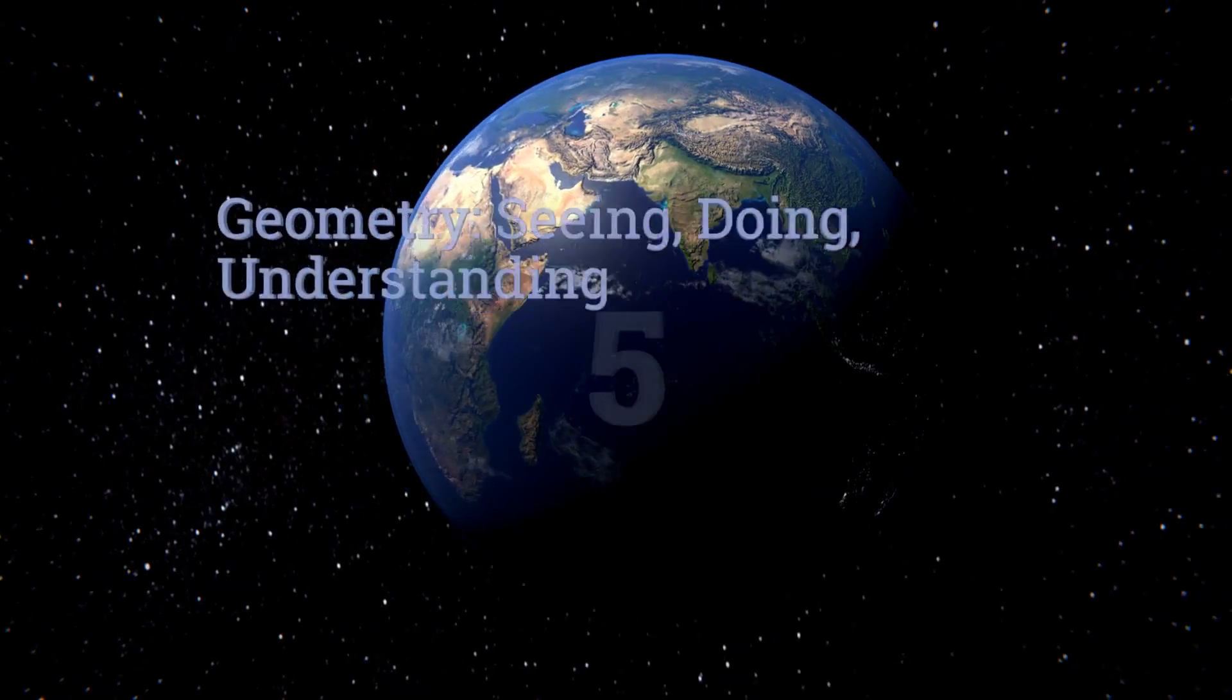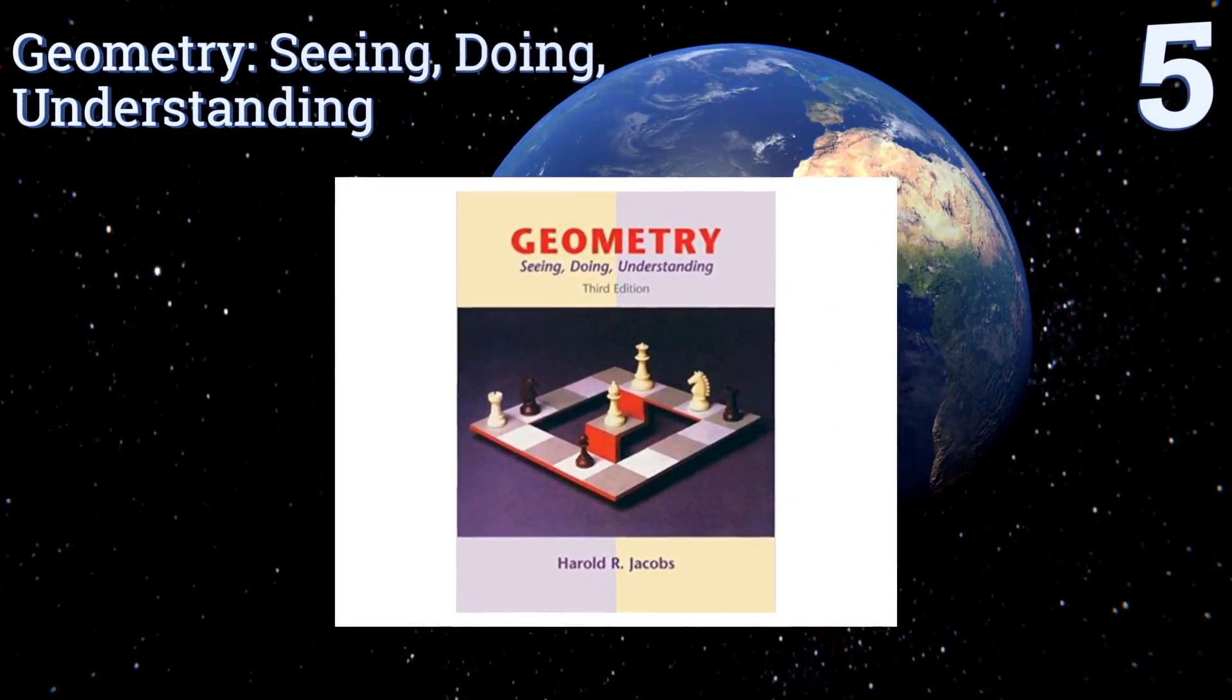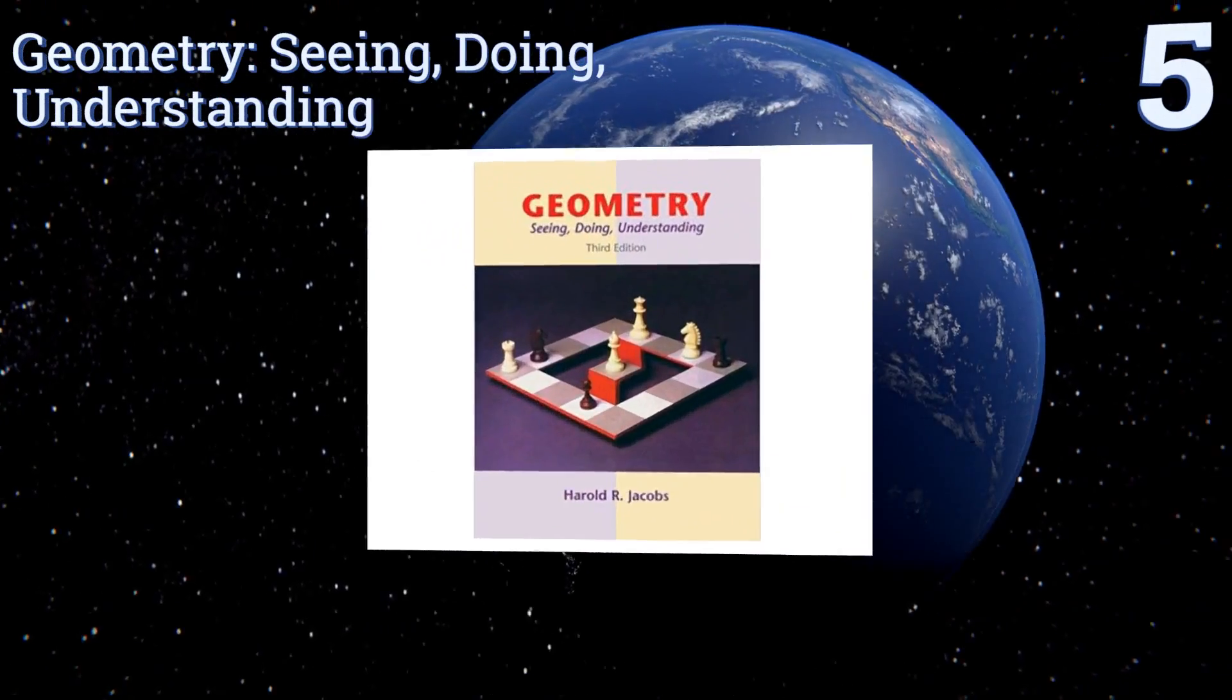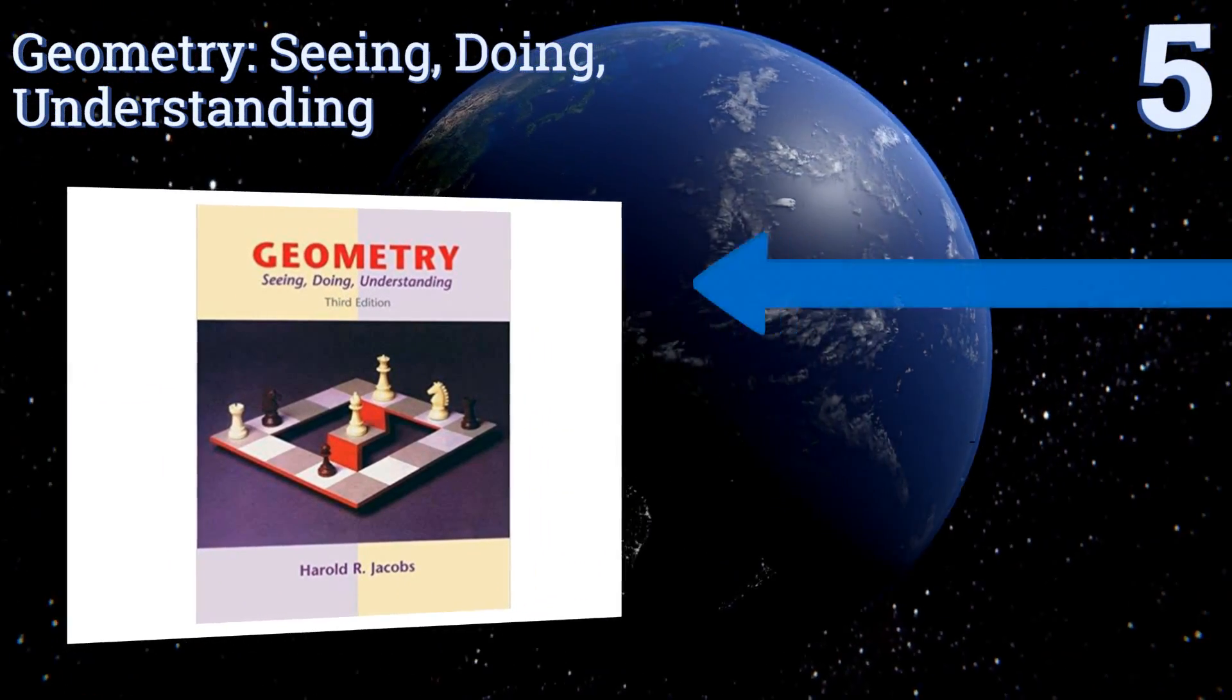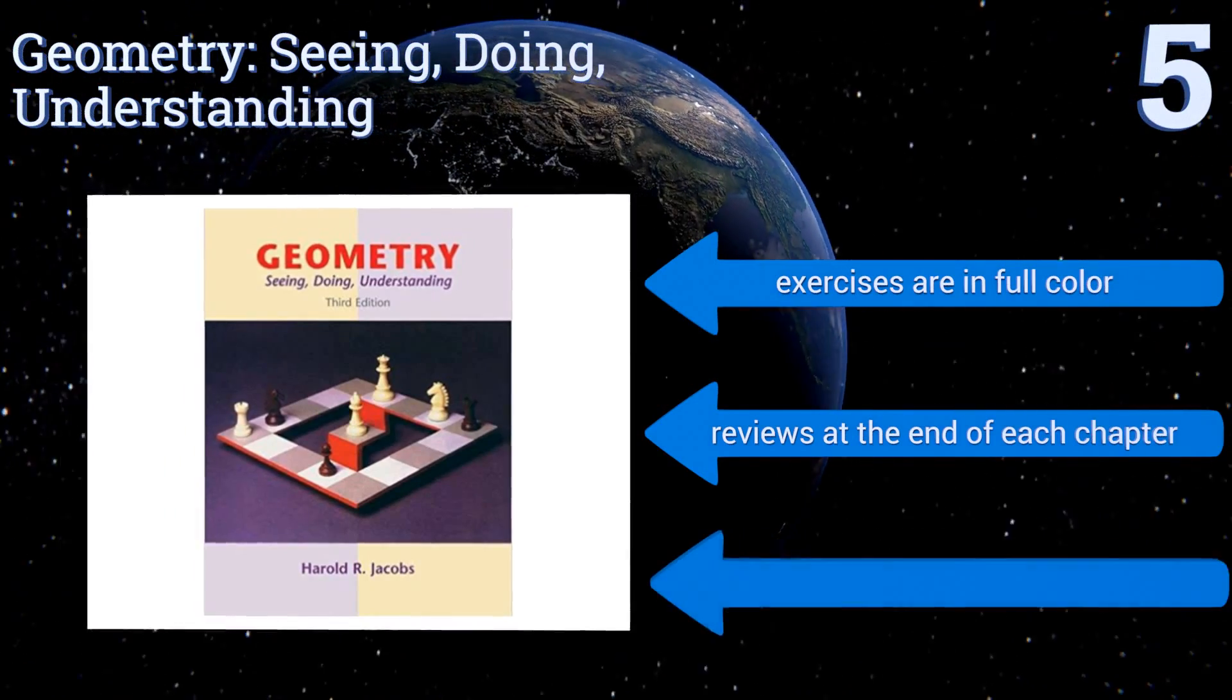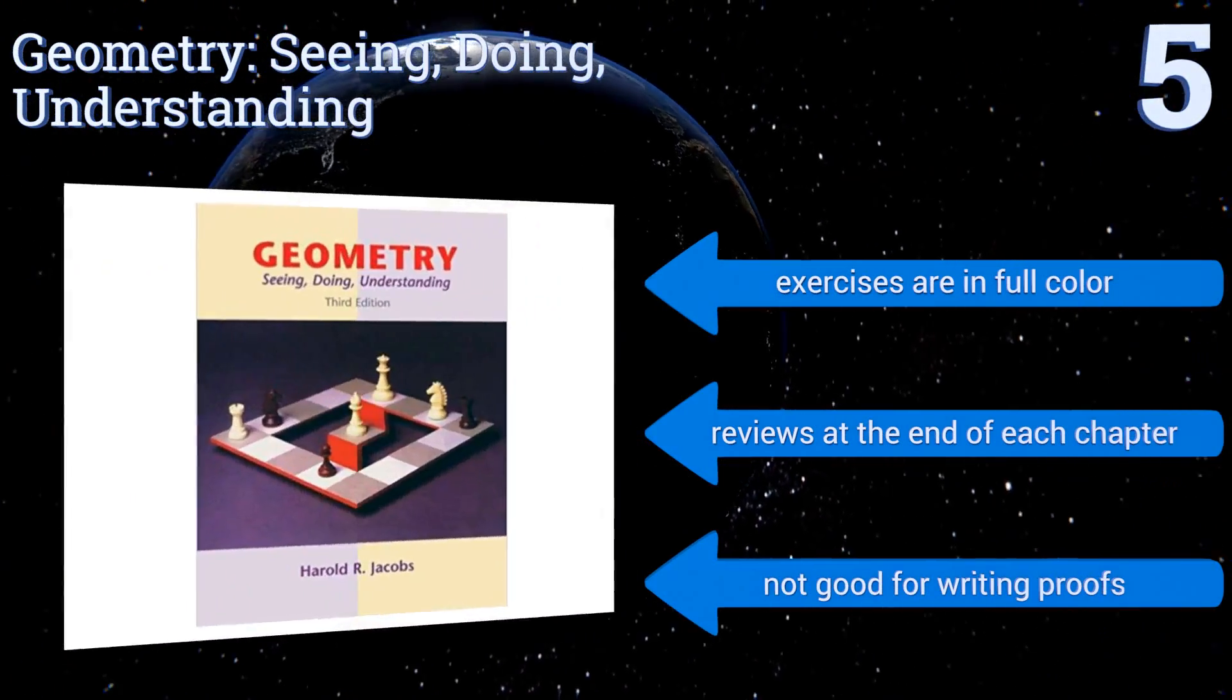Halfway up our list at number 5, Geometry: Seeing, Doing, Understanding is one of the best texts for helping high schoolers relate to the mathematics, as the language is engaging and often humorous. It places a heavy emphasis on learning through drawing, so expect to use your compass and protractor. It includes full color exercises and reviews at the end of each chapter, but it's not good for writing proofs.